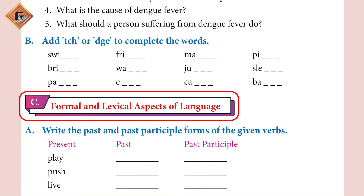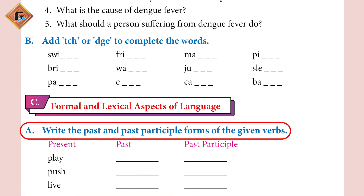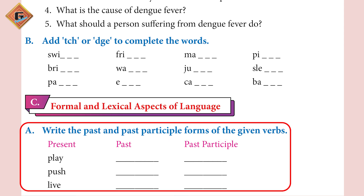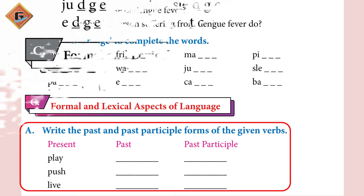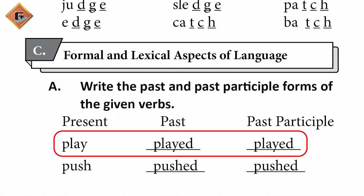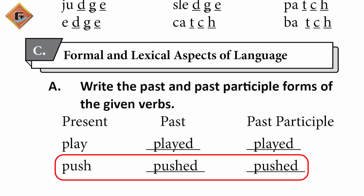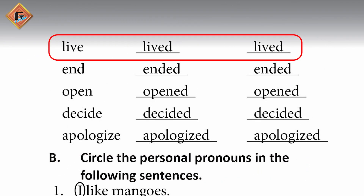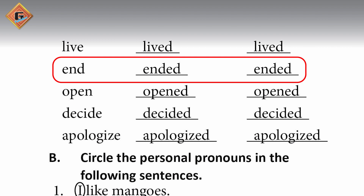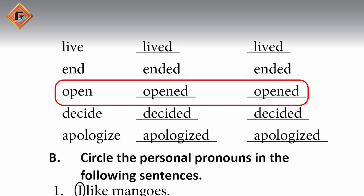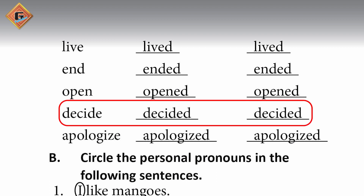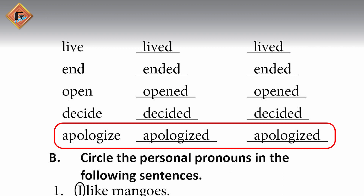Part C: Formal and Lexical Aspects of Language. Part A: Write the past and past participle forms of the given verbs. Push — pushed — pushed. Live — lived — lived. End — ended — ended. Open — opened — opened. Decide — decided — decided. Apologize — apologized — apologized.